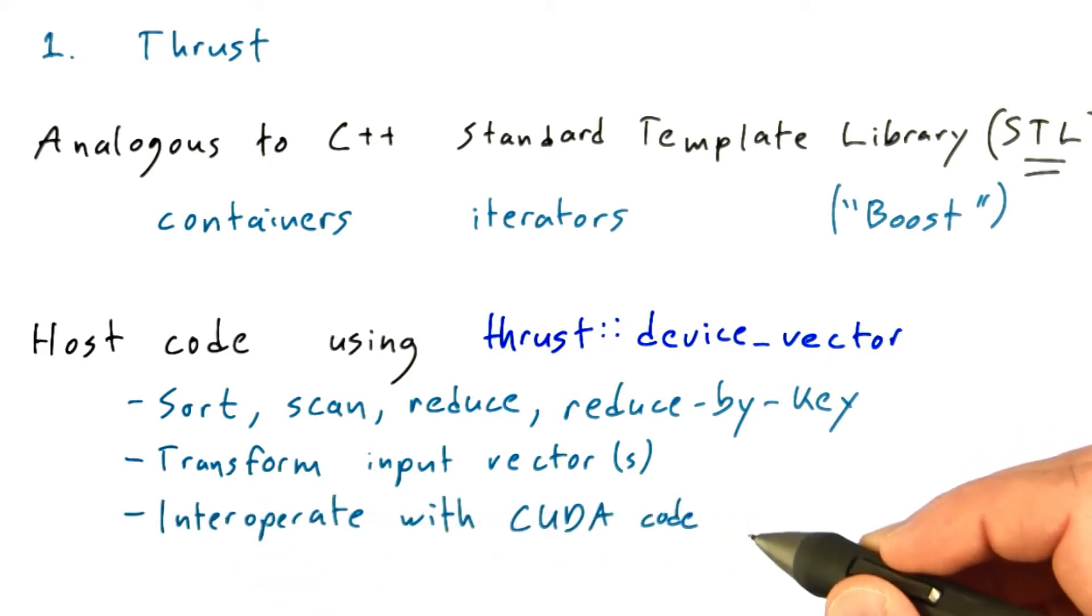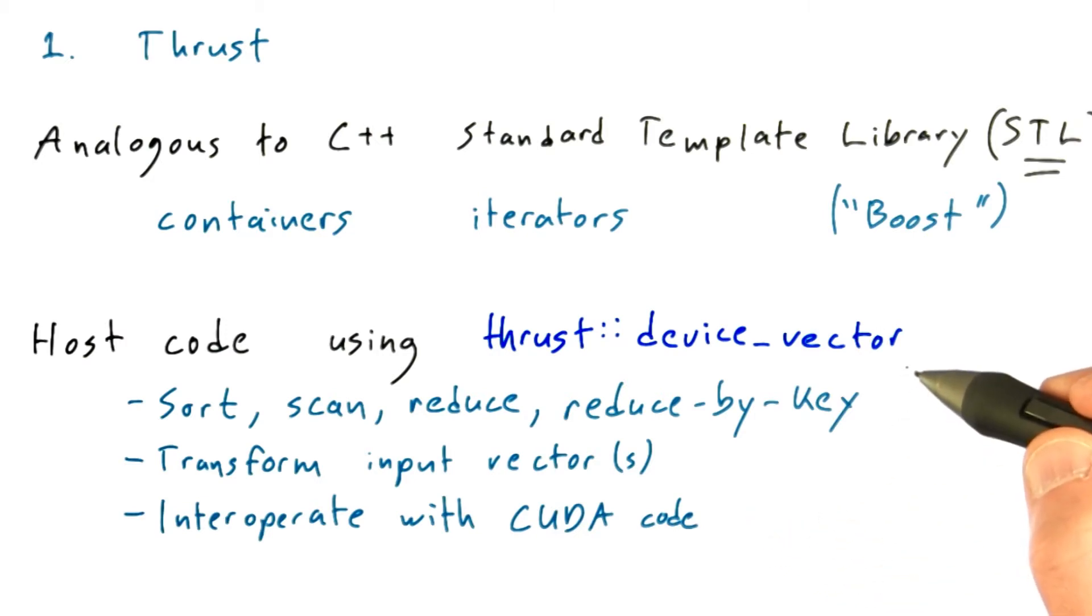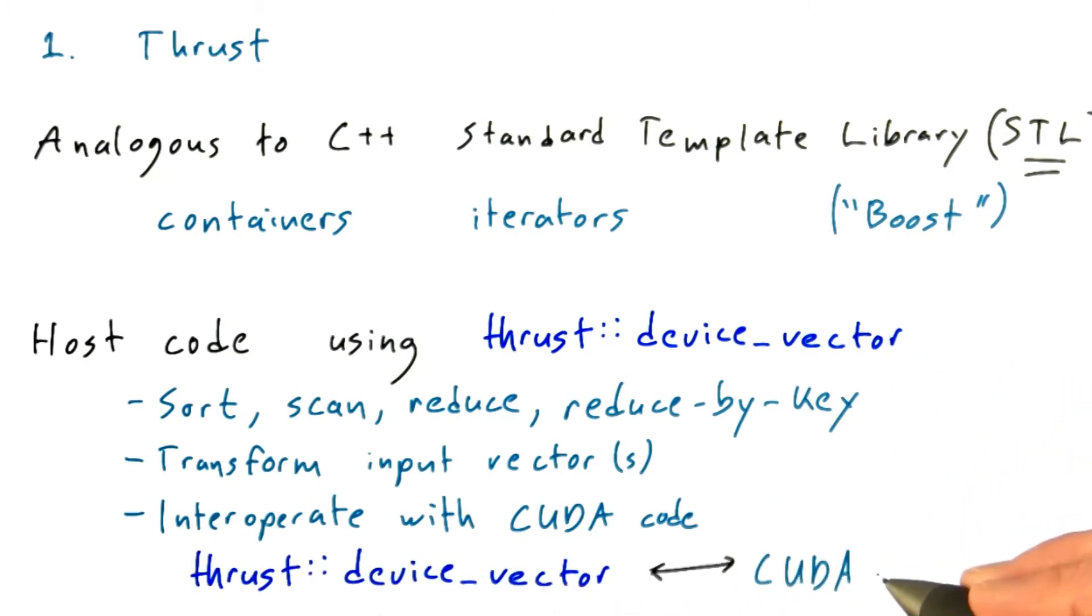You can interoperate with CUDA code. You can mix up thrust code, which is running on the host and doing things on the device. But if you then need to do something that's not built into thrust or that's difficult to do with thrust, and you've got some raw CUDA kernels that you want to run, then you can simply get the pointer to a device vector, to the data in a device vector, or hand a pointer to thrust to wrap up as a device vector.